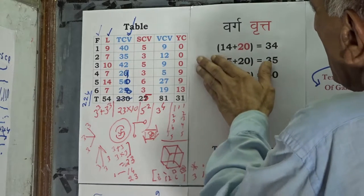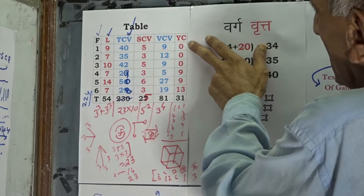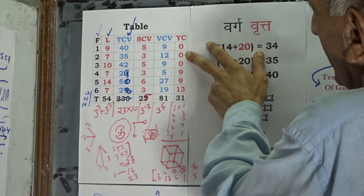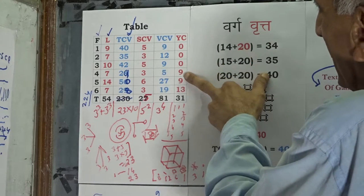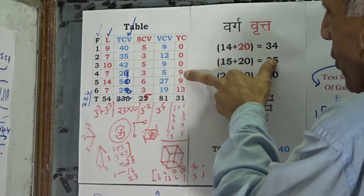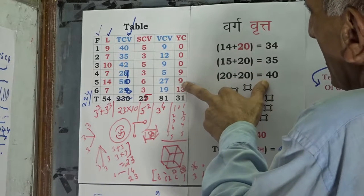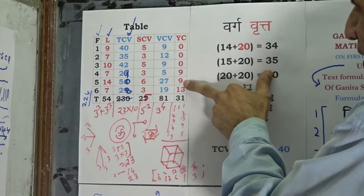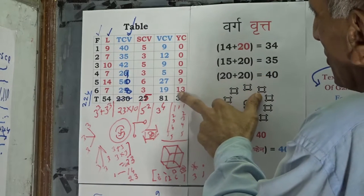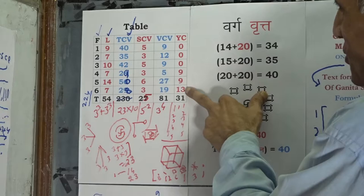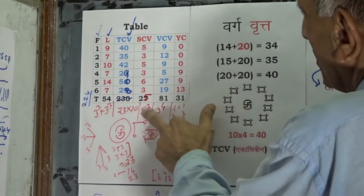Now let us look at the Yama code values. Eka Adhiken, Purven, and Anurupen are not having any Yama letter, while Niklim has one Yama letter — Anuswara — of value 9. Navasthacharamam also has one Yama letter — Anuswara — of value 9. And Dashata has one Yama letter — Anuswara — of value 30, making the total Yama value 31.